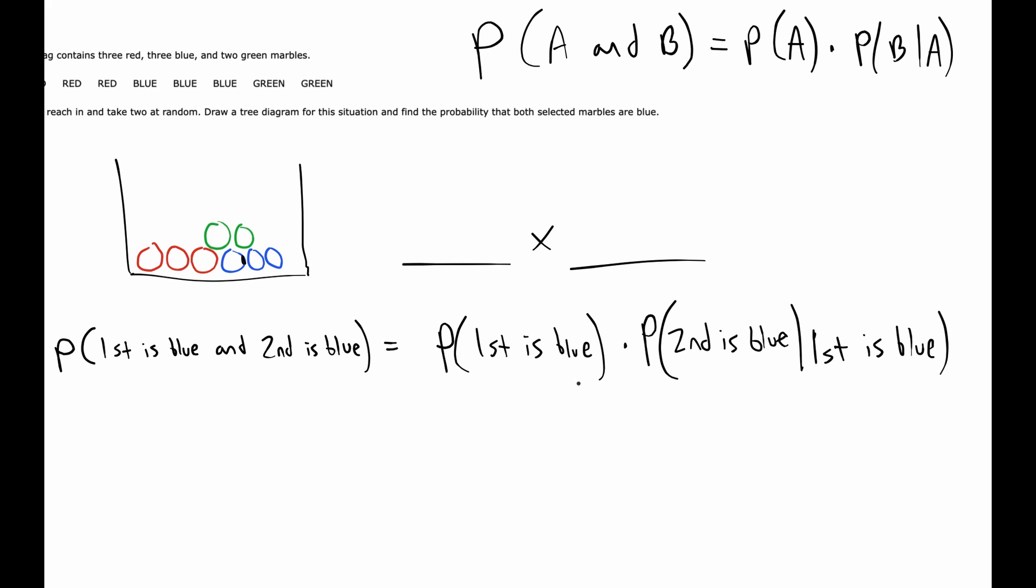So we need to multiply: what's the probability the first choice is blue? Well, we've got three possible successes out of eight, so our fraction for the first one would be three out of eight.